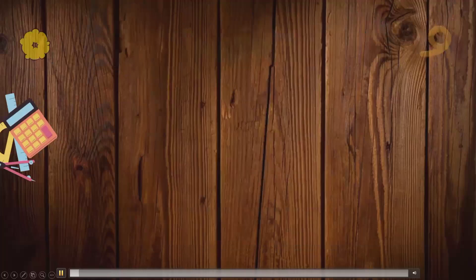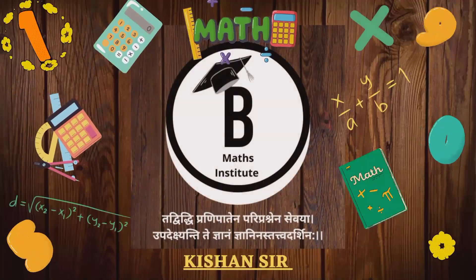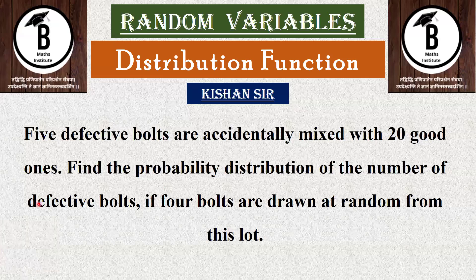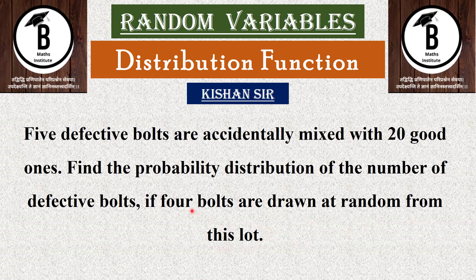Today we are going to do a random variable distribution function. In the distribution function, the question given is: 5 defective bolts are accidentally mixed with 20 good ones. Total bolts are 20 plus 5, which means 25 total. Find the probability distribution of the number of defective bolts if 4 bolts are drawn at random. Total is 25, we need to select 4.